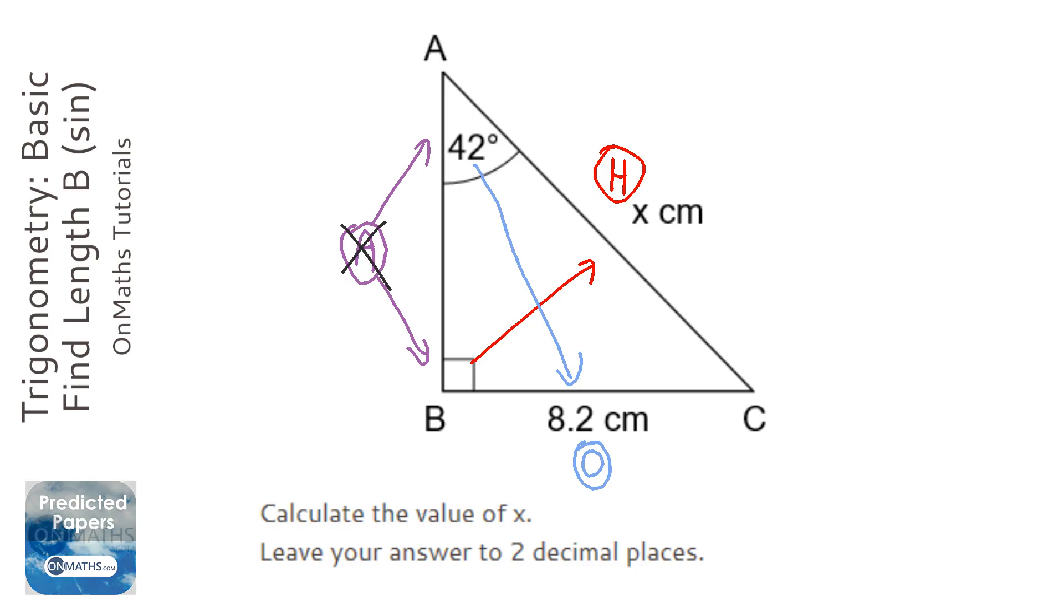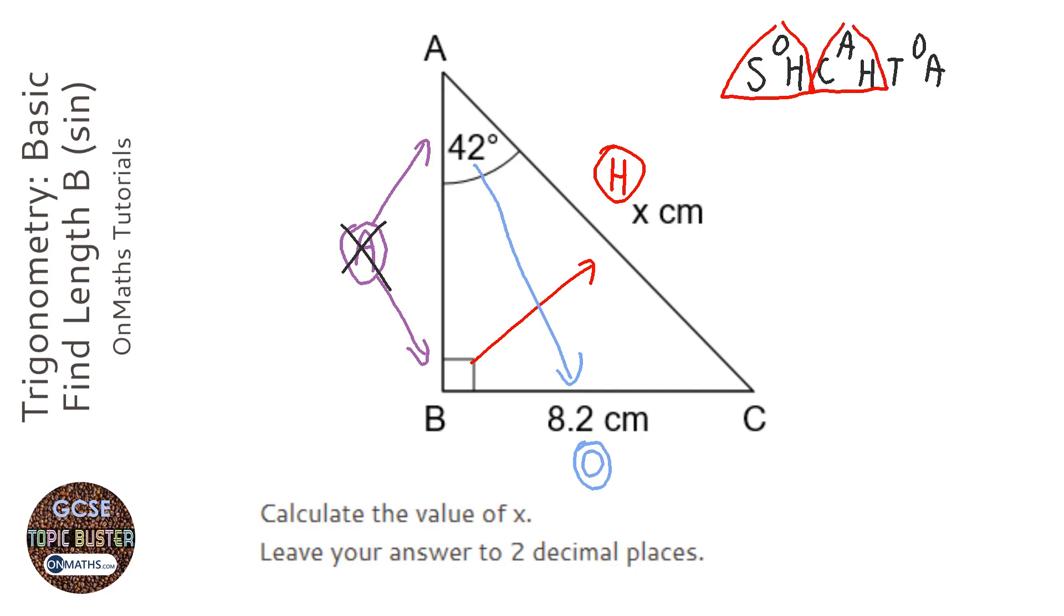Okay, and the next step is to write down Sokotoa. So-ka-toa. And it's really important that you remember Sokotoa, because you'll need it to be able to answer this question. It's not given to you. And this is a selection of three triangles that show you which trigonometric ratio to use, sine, cos, or tan, and how to work it out.